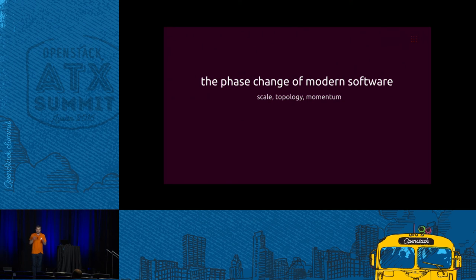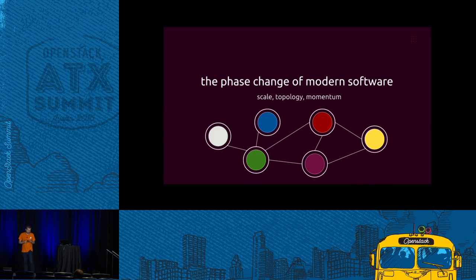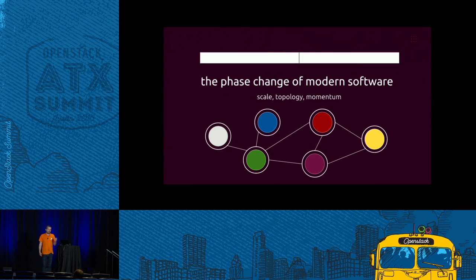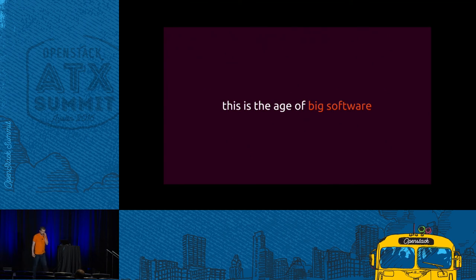Modern software is going through a change from enterprise software that was traditionally vertically integrated — very tight coupling between application, operating system, and hardware. Now we're seeing software made up of many different, often smaller components spread across very many different machines. Complex application architectures contain many pieces running on many more machines, with components striped across many servers. We call this big software.